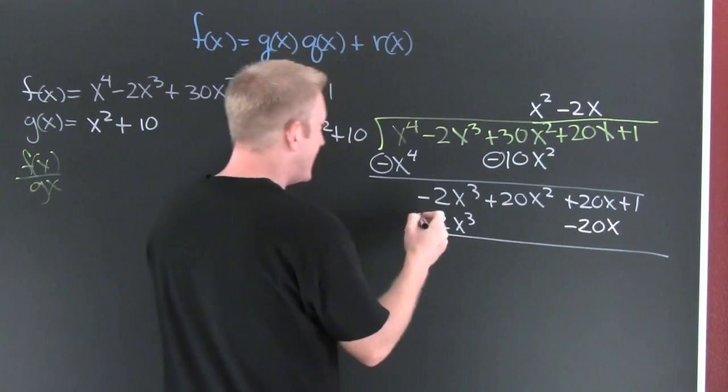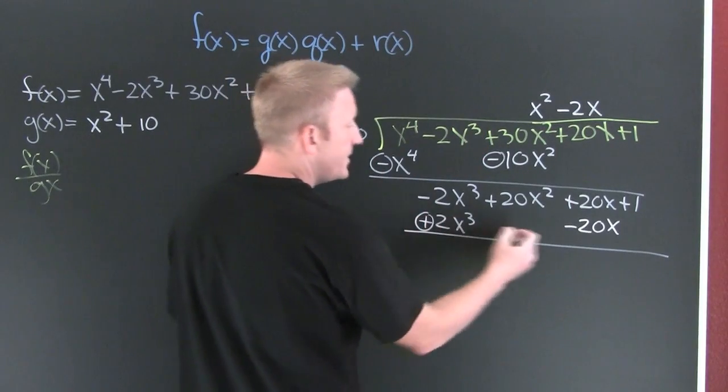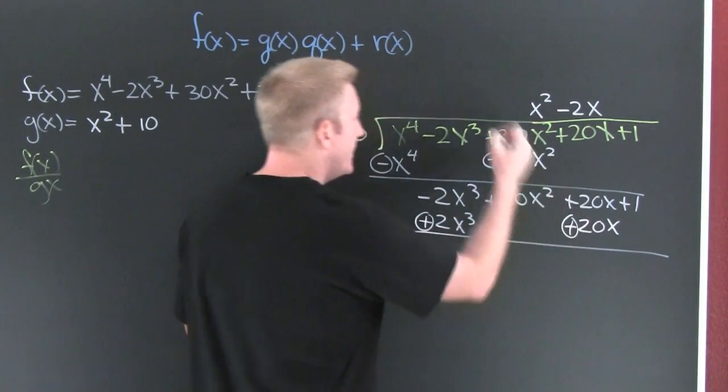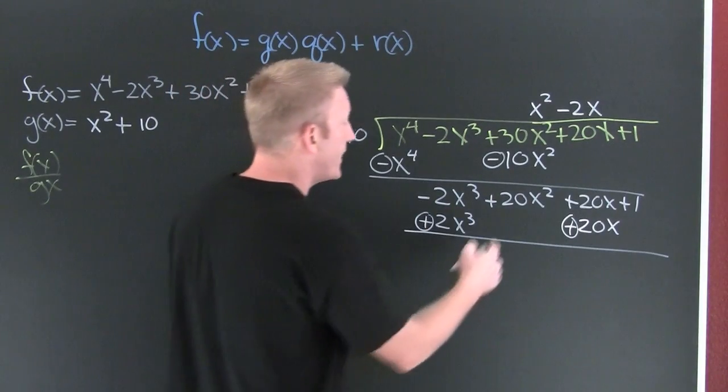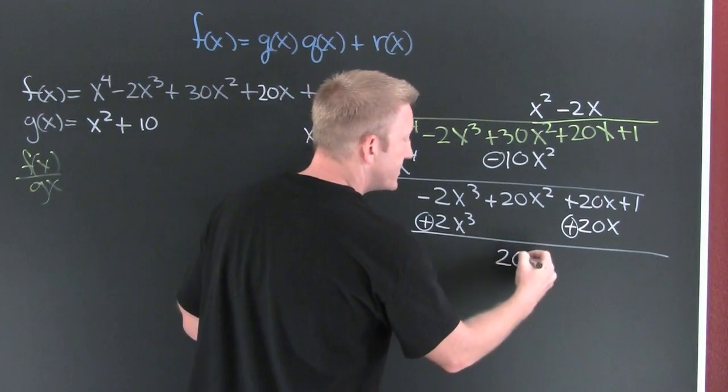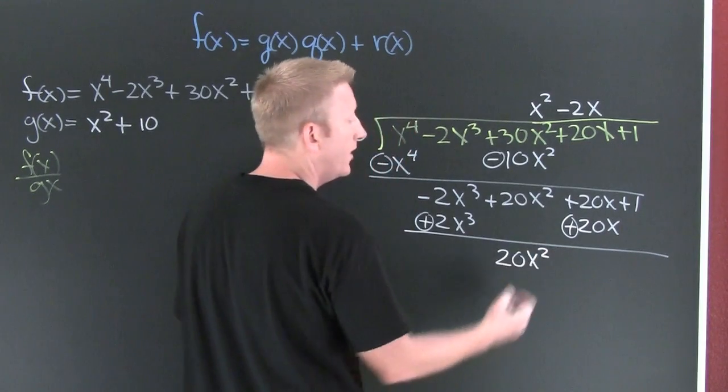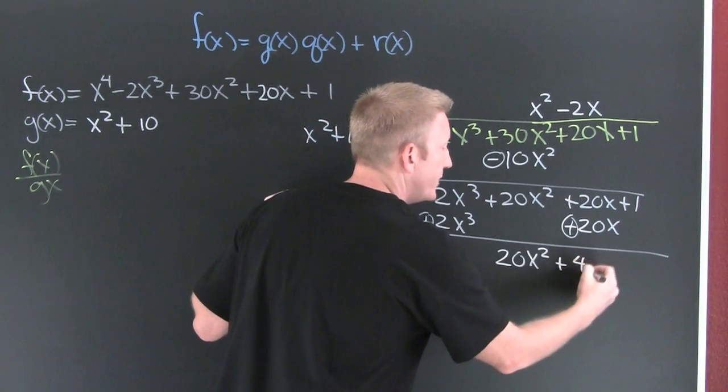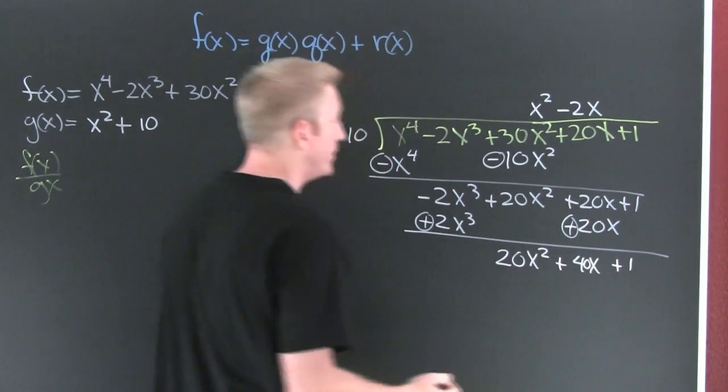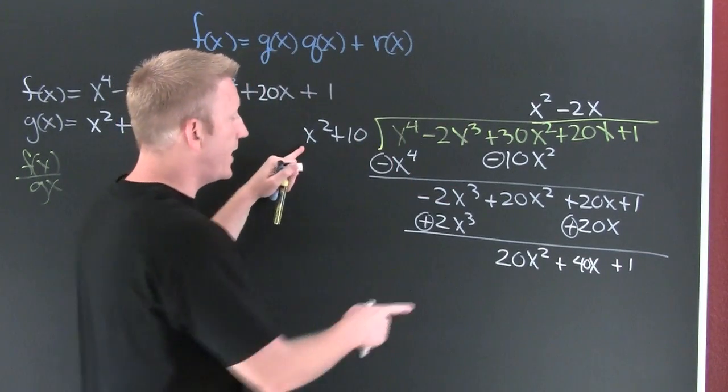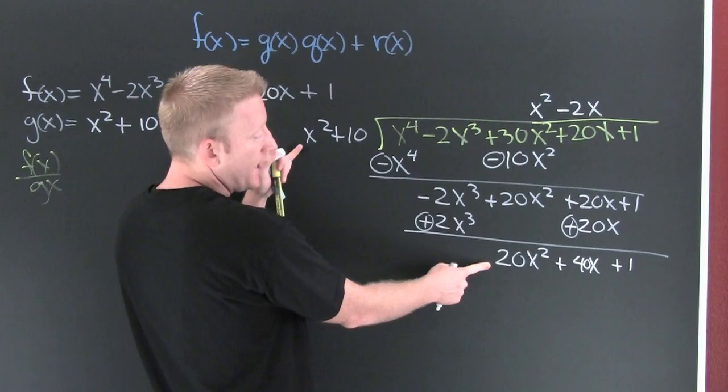Then I'm going to change the signs. I like to circle it, lets me know I've changed it, and add down. No x to the third, the desired effect. This is 20x squared plus 40x, and then I'm going to bring down that one: plus 1. What am I going to multiply x squared by to get 20x squared?